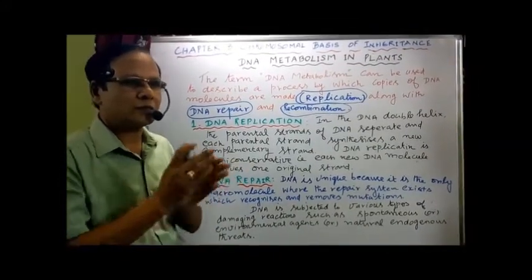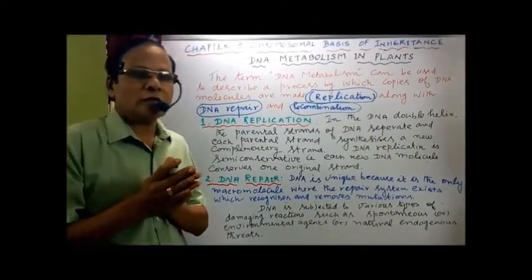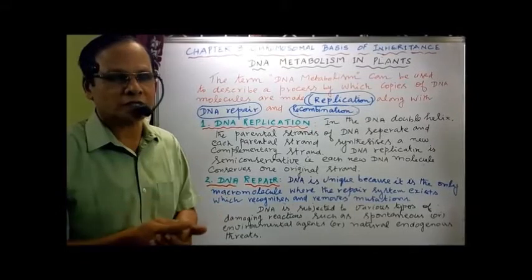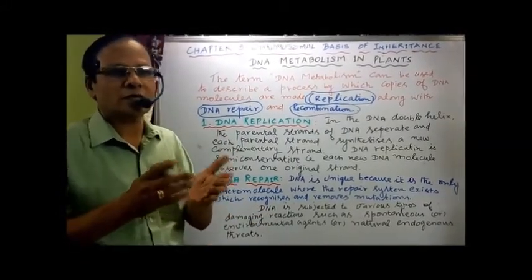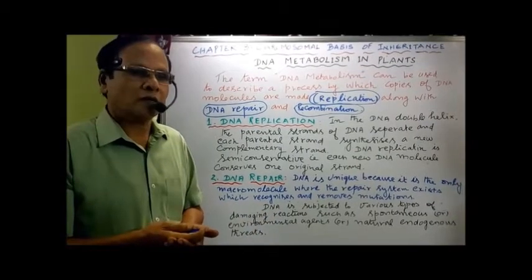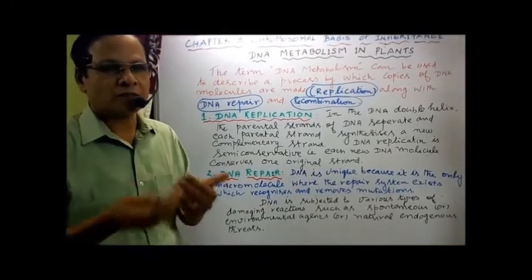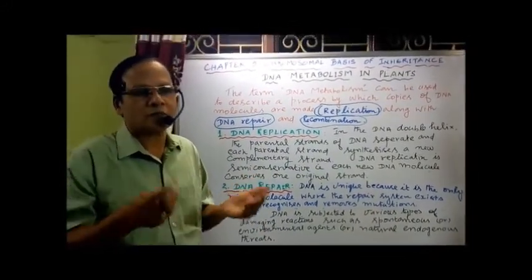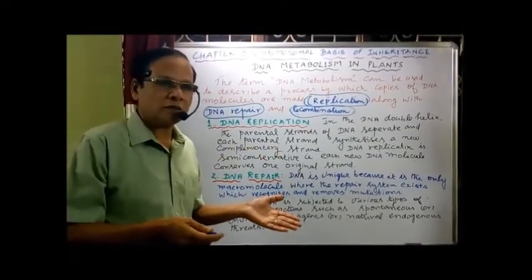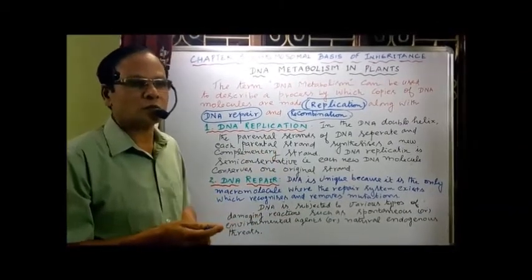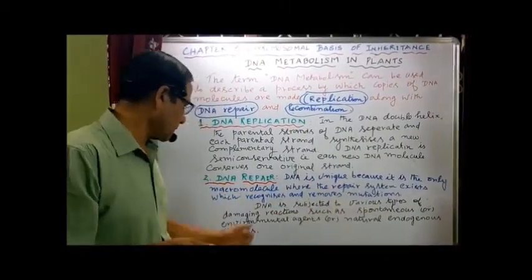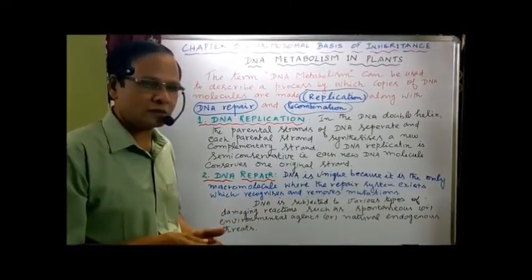The DNA is subjected to various damaging reactions. These damaging reactions may be natural - what is called spontaneous - caused by spontaneous agents, or caused by environmental agents such as temperature, or caused by natural endogenous threats - factors present within the body. So due to spontaneous, environmental agents, or natural endogenous threats, we have repair in the DNA molecule. The DNA repair system plays an important role in maintaining the genetic or genomic integrity of living organisms.